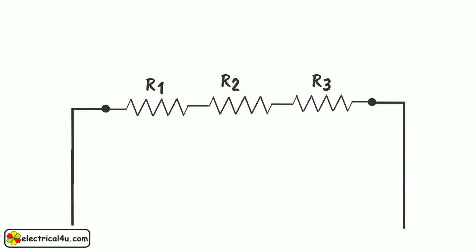Here, this right end of R1 is connected to left end of R2. Again, the right end of R2 is connected to left end of R3. Now, we can say these resistors are connected in series.